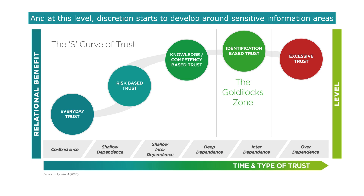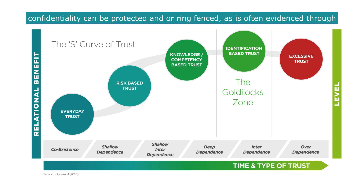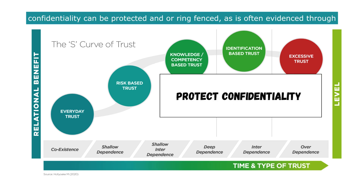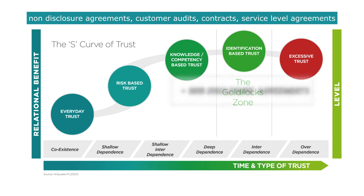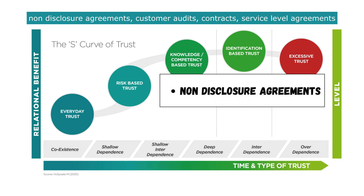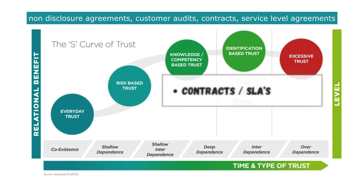At this level, discretion starts to develop around sensitive information areas within a relationship. This can often be seen through both parties agreeing how confidentiality can be protected and ring-fenced, as is often evidenced through non-disclosure agreements, customer audits, contracts, and service-level agreements.